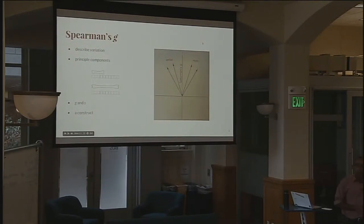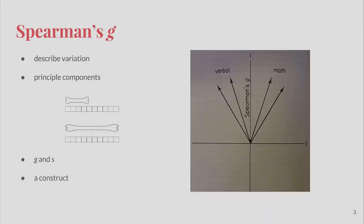The basis for what Binet came up with, and what others like Spearman and Cyril Burt ran away with, was this idea of factor analysis. Factor analysis is a technique many of you are familiar with. The idea is that we have all of these data, and we want to describe the variation by rotating axes to determine principal components — a new orthogonal basis set that captures the variability in the system. A good way to think about this is bones.